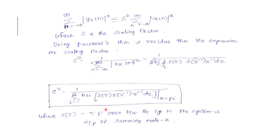s squared equals 1 divided by the summation of residues from i equals 1 to N at z equals p_i, where S(z) is the transfer function seen between the input to the system and the output of summing node k.